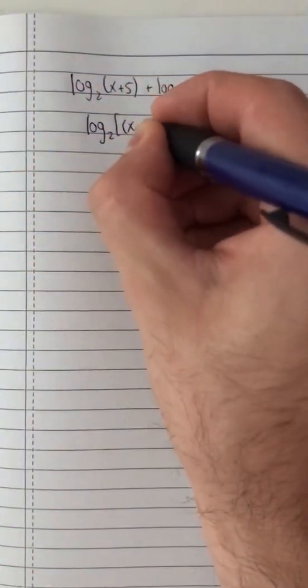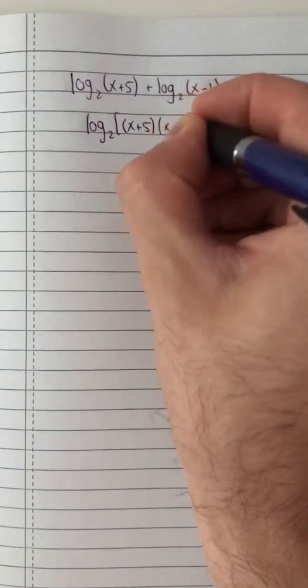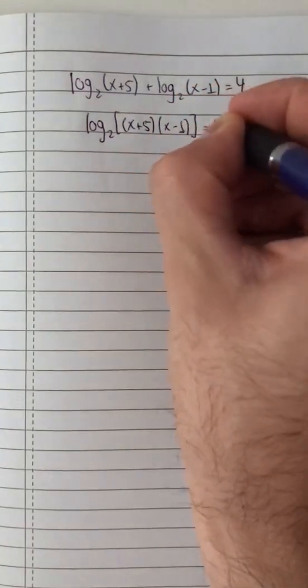Let's think out of the box to solve this problem. I can say this is the logarithm base 2 of x plus 5 times x minus 1, and this is equal to 4.